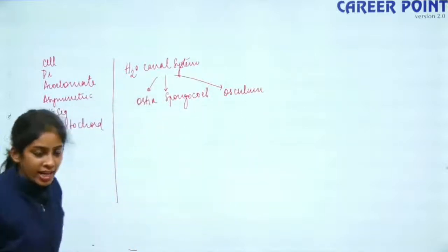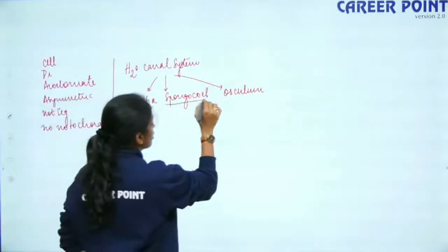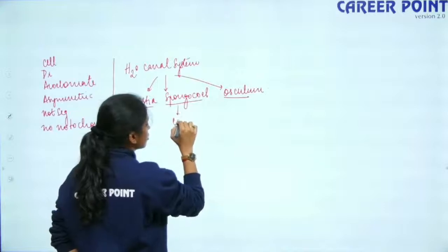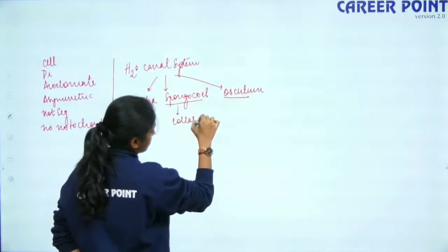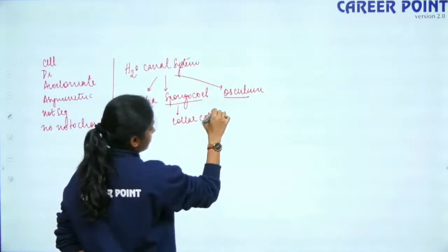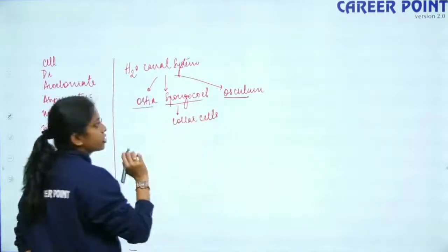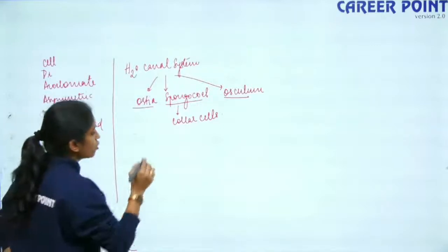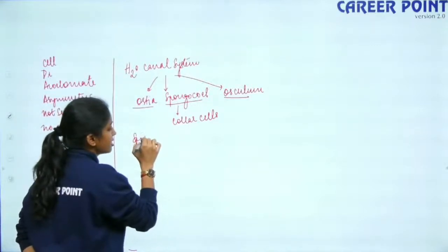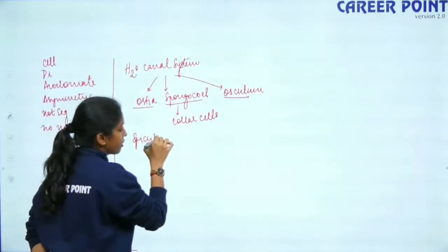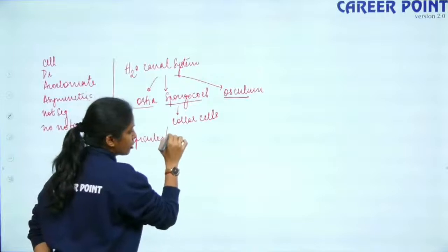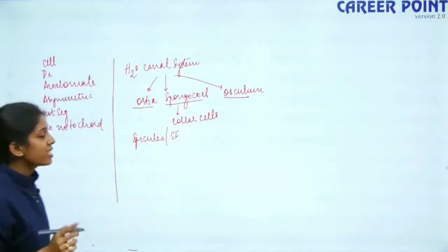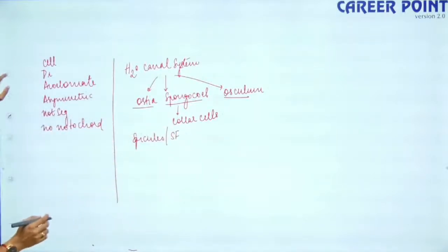The spongocoel has cells called collar cells. Sponges also have skeletons called spicules or spongin fibers — these are two important points to remember about Phylum Porifera.